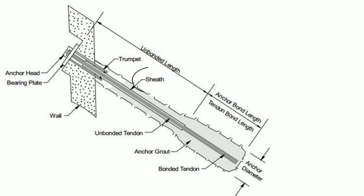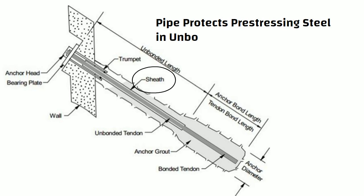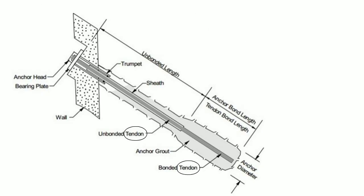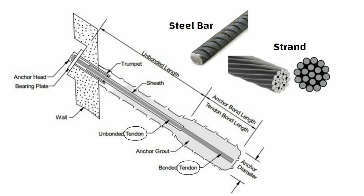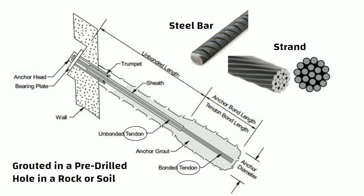The sheath is a smooth or corrugated pipe that protects the pre-stressing steel in the unbonded length from corrosion. Tendon is a steel bar or strands that is grouted in a pre-drilled hole in a rock or soil.